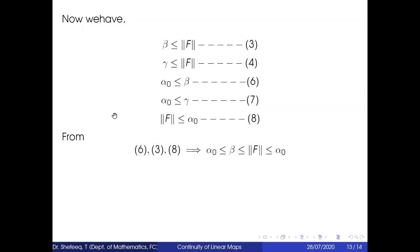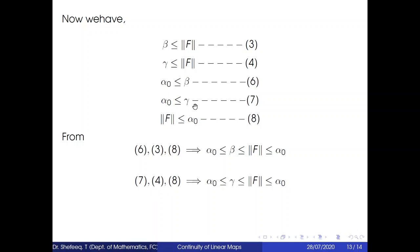From equations 6, 3, and 8 we have: alpha_0 ≤ beta ≤ ||f|| ≤ alpha_0. From equations 7, 4, and 8 we have: alpha_0 ≤ gamma ≤ ||f|| ≤ alpha_0. Therefore alpha_0 = beta = gamma = ||f||. This completes the proof of Theorem 6.6. Thanks.